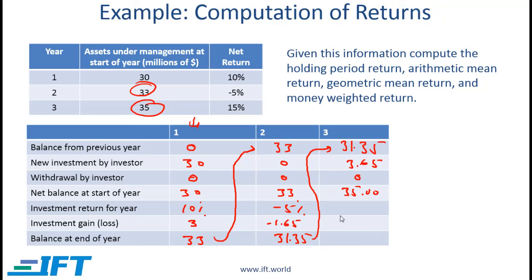In year 3, the investment return is 15%. In dollar terms the gain is $5.25, giving a balance of $40.25 at year end. The question now is: what is the money weighted return? For the money weighted return you look at the exact cash flows, plug them into the calculator, and compute the IRR.